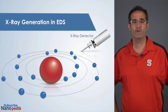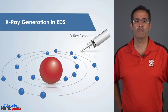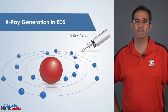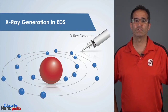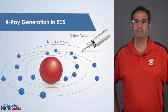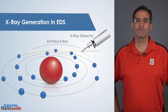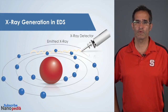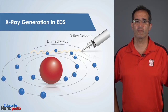An electron from a higher energy outer shell will drop down into this lower energy shell vacancy, and it must lose some of its original energy. The electron's excess energy is emitted in the form of an x-ray. This x-ray can be detected by the EDS detector and analyzed by software to identify the element that it came from.